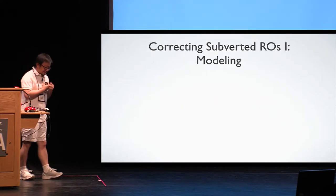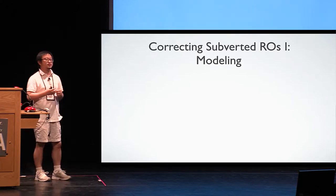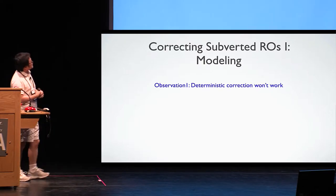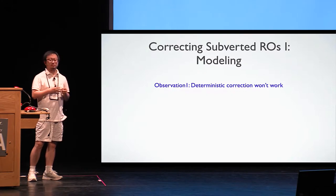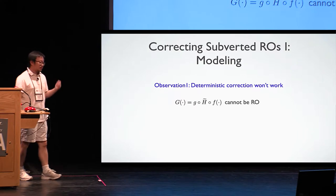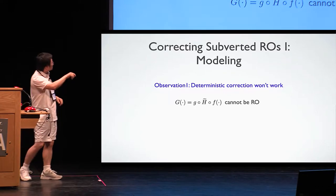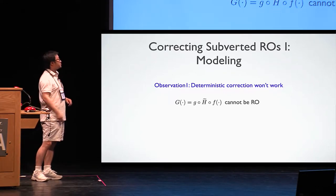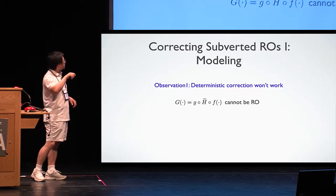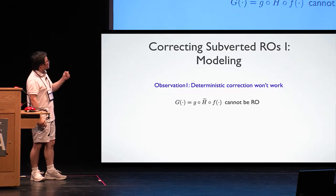So before I explain the formal definition of what we mean by correcting a random oracle, let me briefly introduce a couple of simple observations. So first, actually deterministic correction will never work. Why would we say so? Let's see a concrete example. Suppose the capital G is the corrected version of the hash function and H tilde is the malicious implementation. What we're going to do, we're going to first preprocess the input using some function F and then post-process the output using some function G.